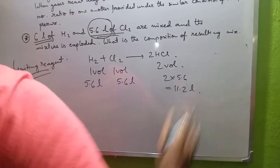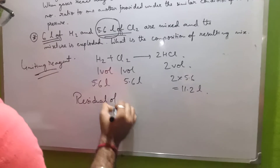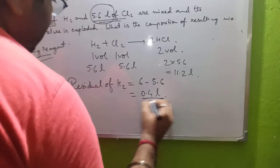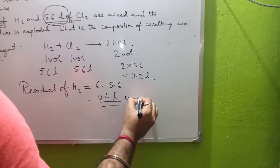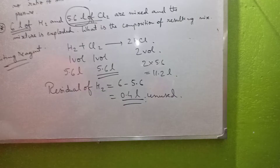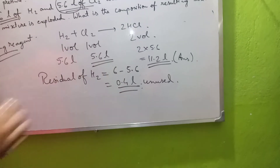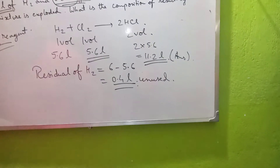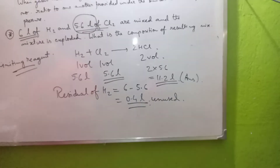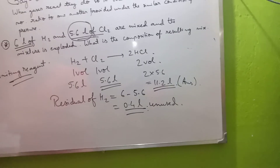The problem asks for the composition of the resulting mixture. The residual hydrogen — the amount of hydrogen left — is 6 − 5.6 = 0.4 liters. This hydrogen is unused because no more chlorine remains after 5.6 liters is consumed. The resulting mixture contains 11.2 liters of HCl and 0.4 liters of residual H₂. This is the type of sum you will encounter in Gay-Lussac's law problems.